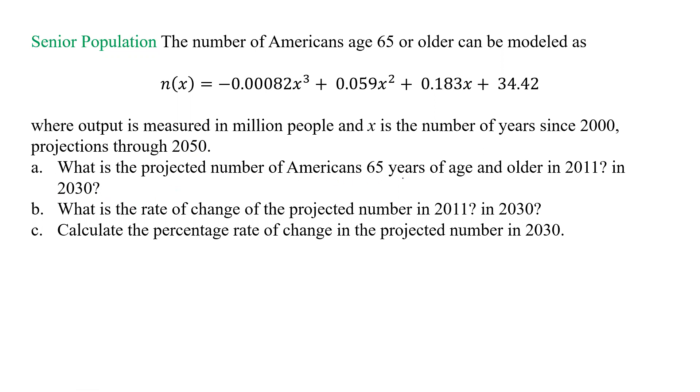So what is the projected number of Americans 65 years of age and older in 2011 and in 2030? For part A, what we need is n of 11 and n of 30. So we plug those values in here, and when we do that, we'll get negative 0.00082 times 11, and that's to the third.